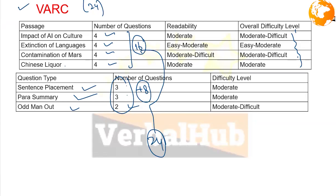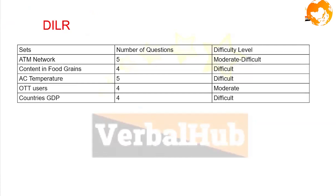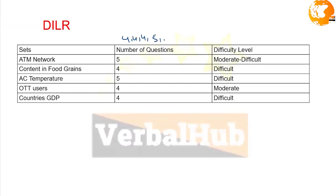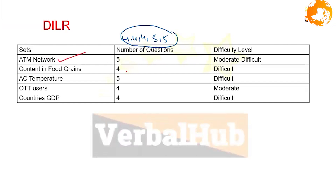Coming to the DILR part: this time five DILR sets were asked. The distribution was four, four, four, five, and five questions across the sets — so five sets totaling 22 questions. The topics and patterns on which they were based were quite varied and interesting this time.